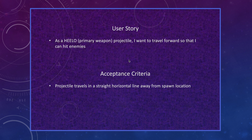My third user story is: as a helo projectile, I want to travel forward so that I can hit enemies. The acceptance criteria is: projectile travels in a straight horizontal line away from spawn location.